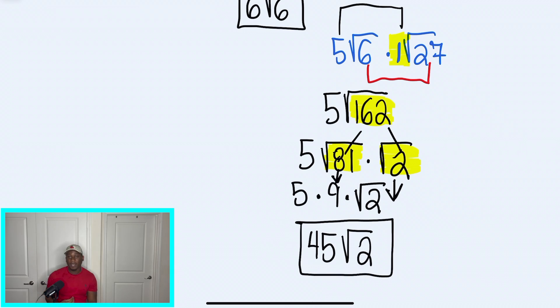So don't forget, there's three very helpful tips on this process. Same root, check that they had the same root. Multiply coefficients with coefficients. And then divide using perfect squares.